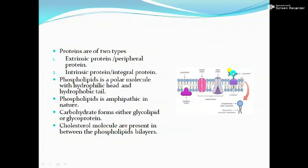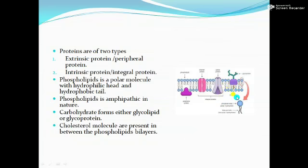Glycoprotein or glycolipid — apart from these carbohydrates, the plasma membrane also contains a large number of cholesterol molecules. For example, in this diagram, the yellow colored small molecules — these are cholesterol molecules. Cholesterol molecules play a functional role in the composition of the plasma membrane. These are all the components of the plasma membrane.